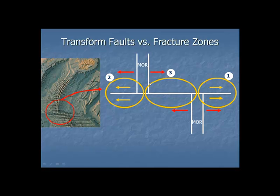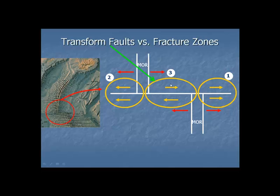Now let's take a look at this third segment in between the two parts of the mid-ocean ridge. What about this part of this plate — moving to the left or to the right? To be consistent with that red arrow, it must be moving to the right. This part of this plate — moving left or moving right? That one has to be moving left. Notice here that these two arrows are moving in the opposite direction. And that's really what differentiates a transform fault — which is the middle segment — from fracture zones, which are the two outside segments. So segments one and two are fracture zones, and the middle segment is a transform fault.